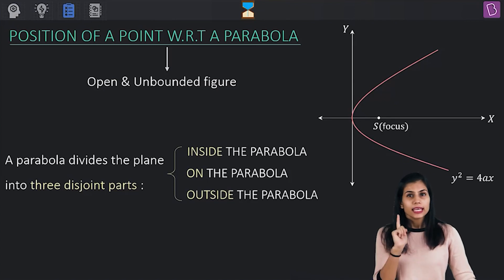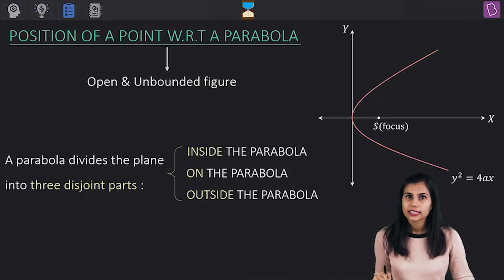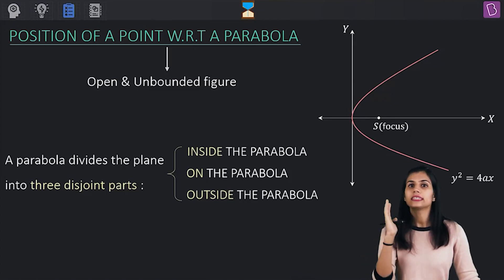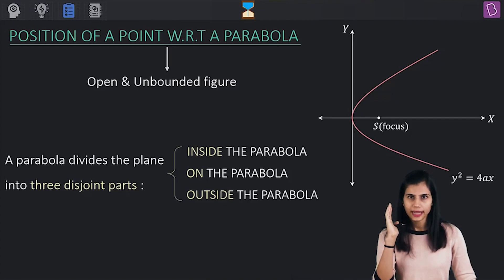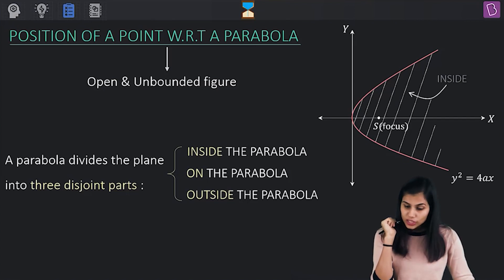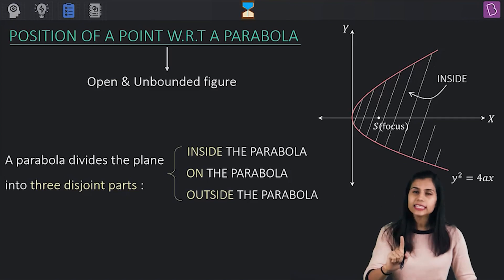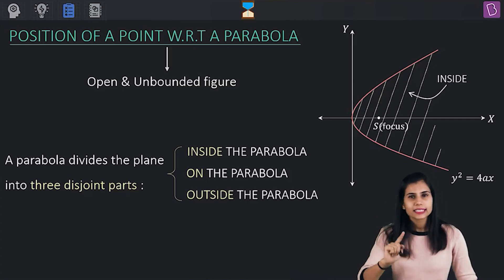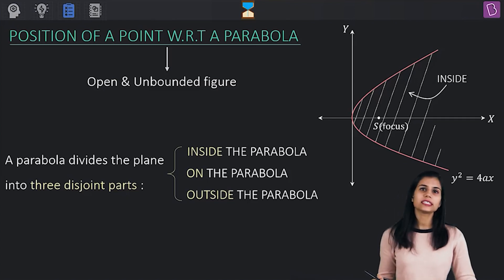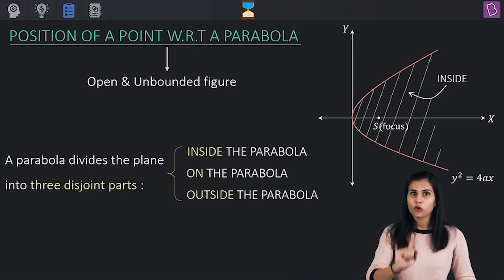So what do I mean when I say inside the parabola and outside the parabola? The region of the parabola which contains the focus — that constitutes being inside the parabola. Any point sitting in this region will be called an interior point of the parabola.